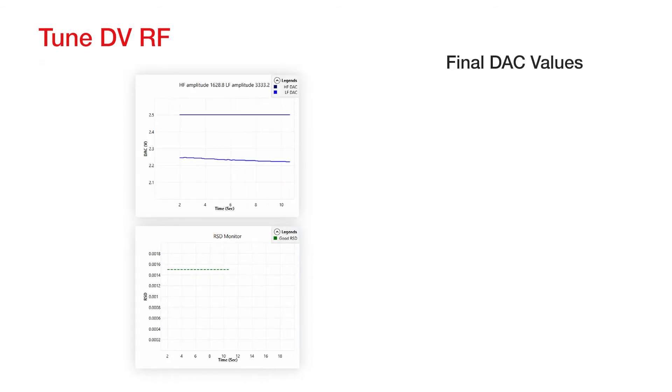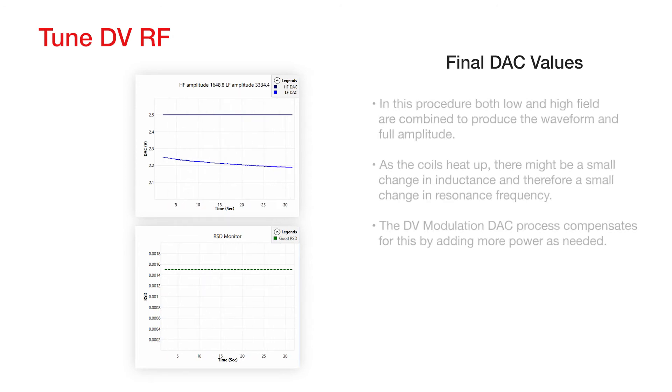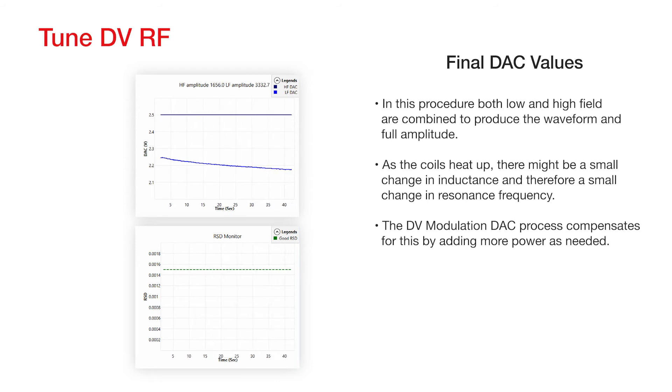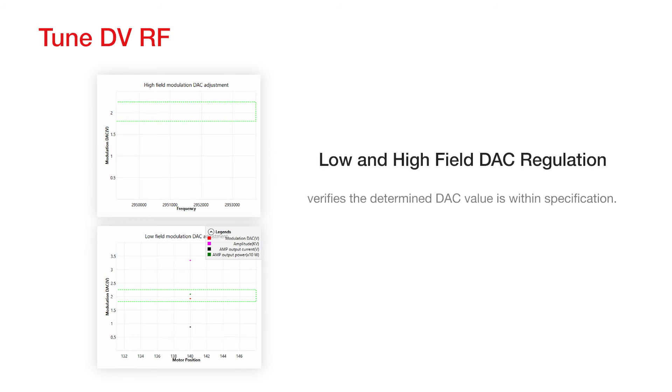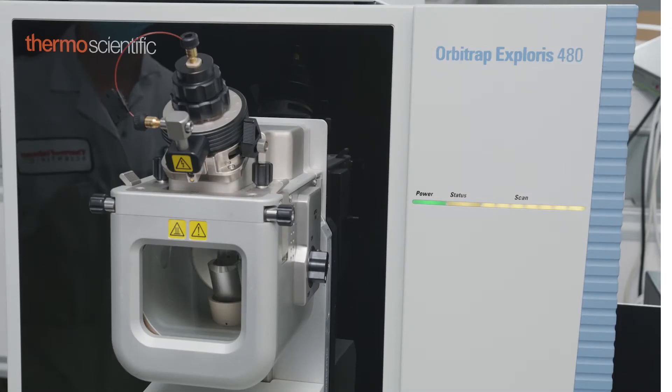Final DAC, digital-to-analog converter values for the amplitude, are determined to give the amplifier the set point. In this procedure, both low and high electrical fields are combined to produce the waveform in full amplitude. As the coils heat up, there might be a small change in inductance, and therefore a small change in resonance frequency. The DV modulation DAC process compensates for this by adding more power as needed. Low and high-field DAC regulation verifies the determined DAC value is within specification. The tuning process is now complete, and you're ready to run your MS with FAIMS.